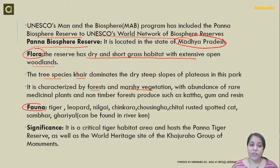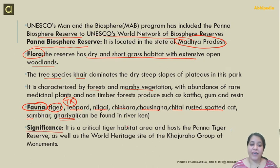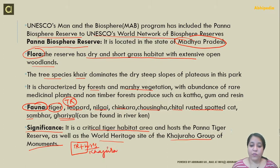Considering the fauna of this area, the tiger is the main species of the Panna Tiger Reserve included in this Biosphere reserve. Other animals include leopard, nilgai, chinkara, chausingha, chital, rusty-spotted cat, sambar, and gharial, which is found in the Ken river passing through this tiger reserve. It is a critical tiger habitat area and also hosts the world heritage site of Khajuraho group of monuments, which is why it is included in the UNESCO program.